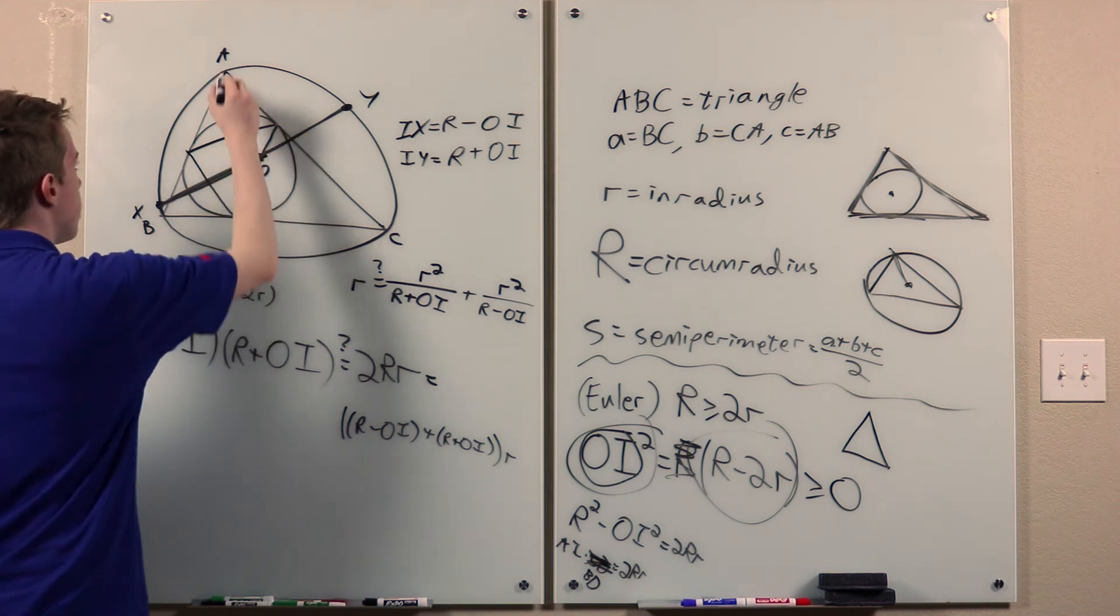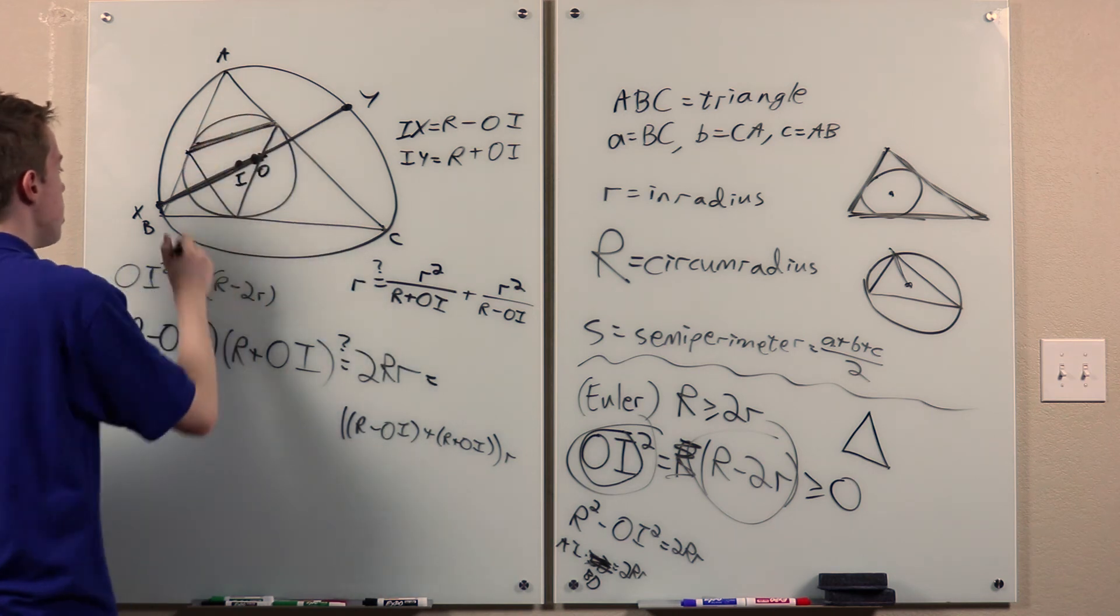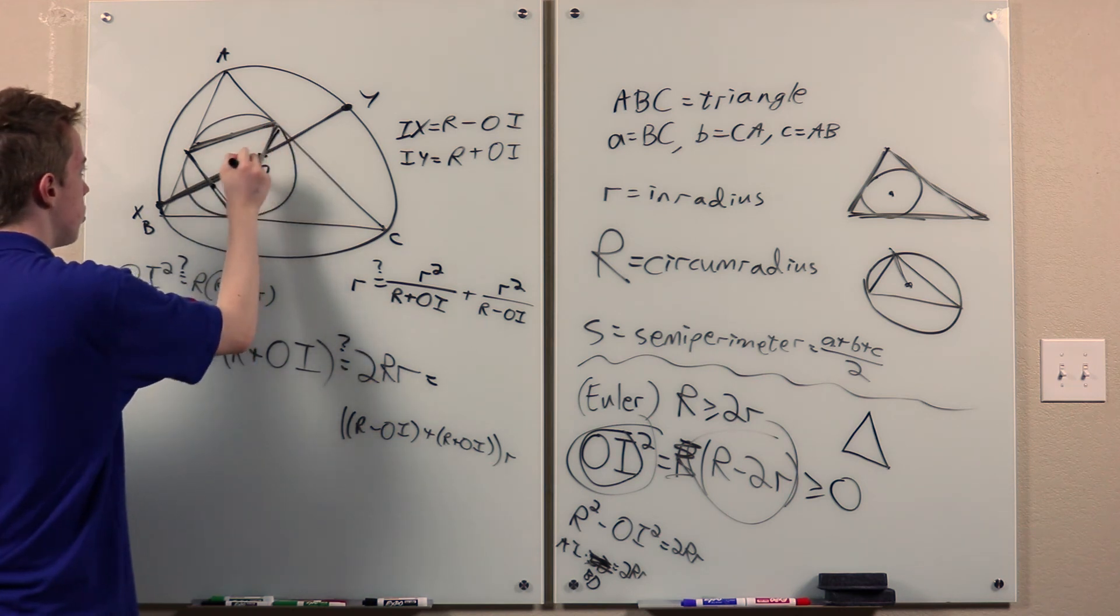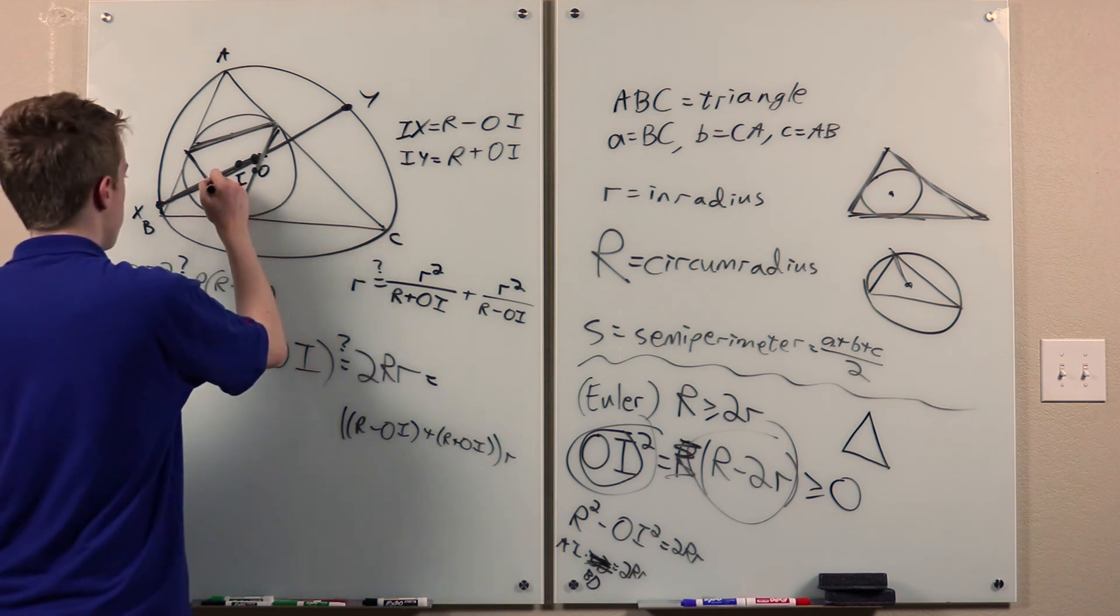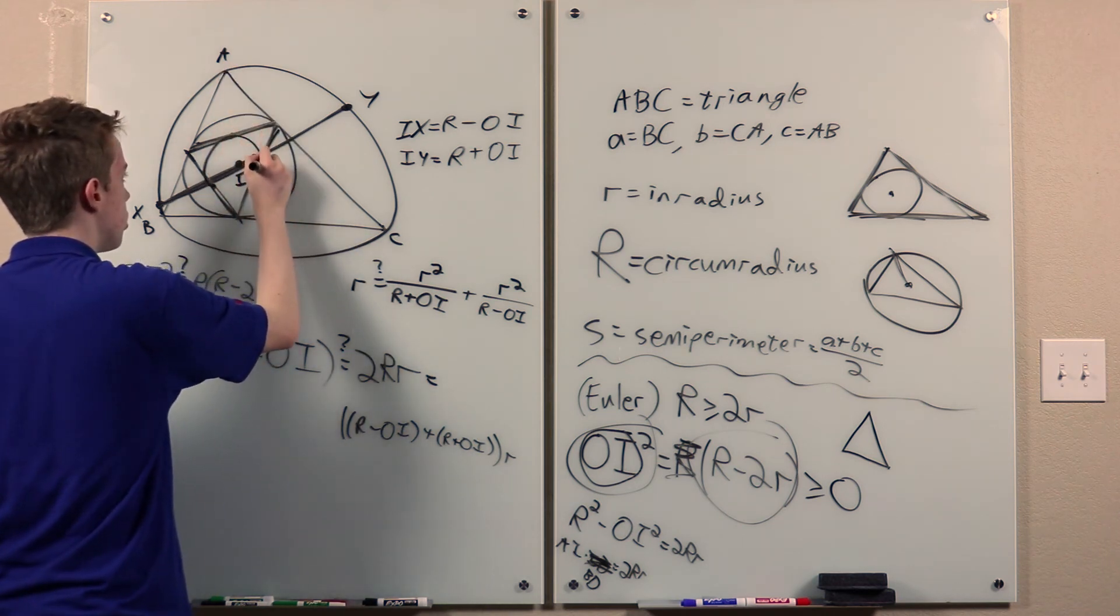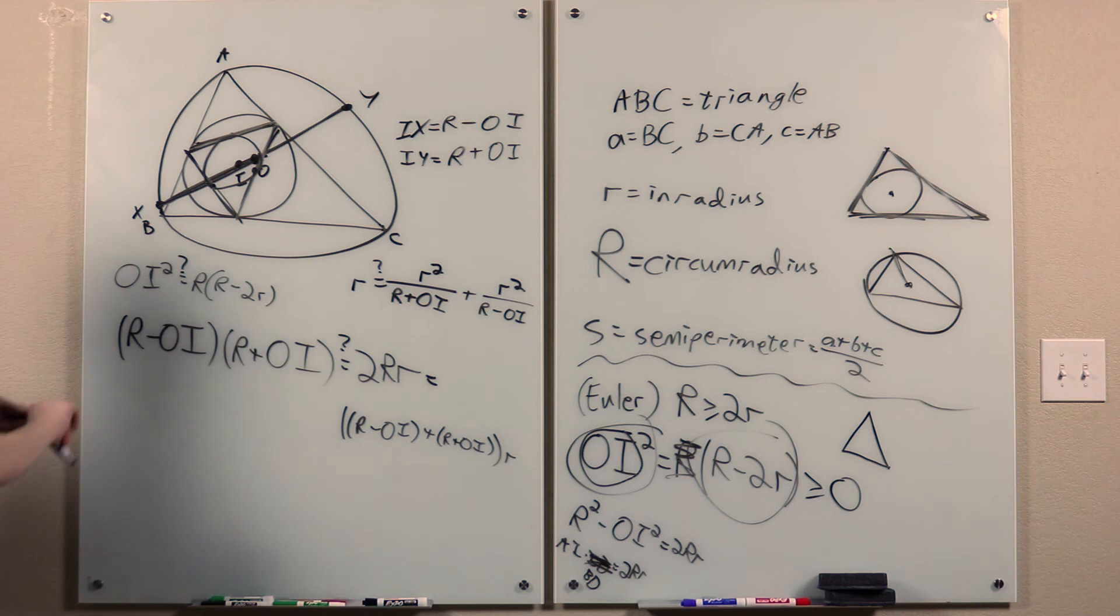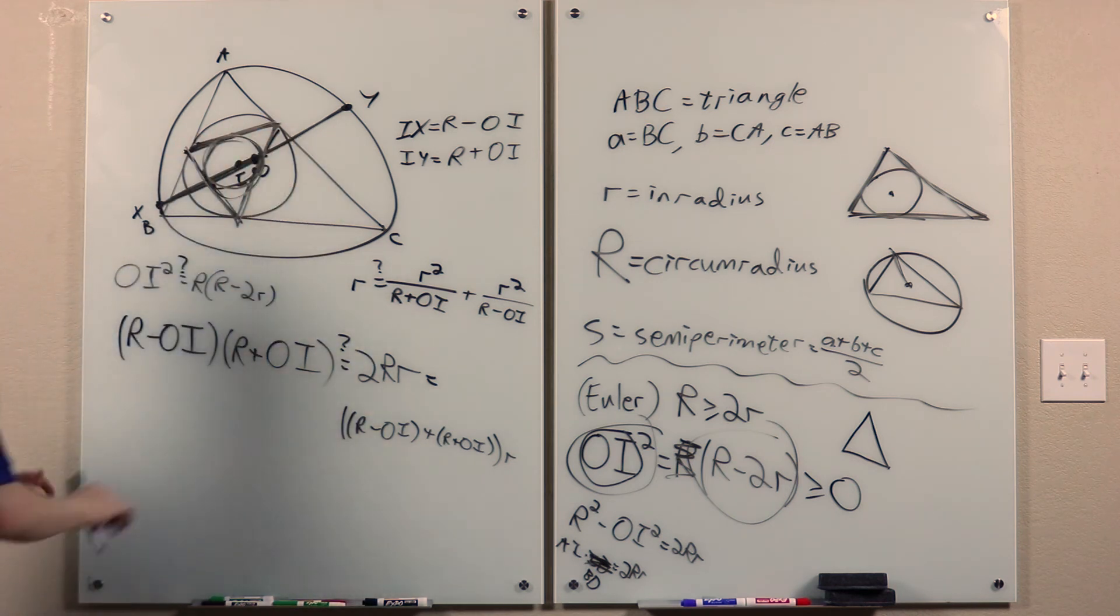So if we invert about the incircle, we know that A inverts to the midpoint of this, B inverts to the midpoint of this, and C inverts to the midpoint of this. So the circumcircle of ABC will invert to the circle through these three points. So it's the circumcircle, so this will actually be the nine-point circle of the contact triangle, which is this.